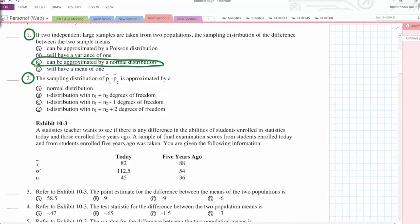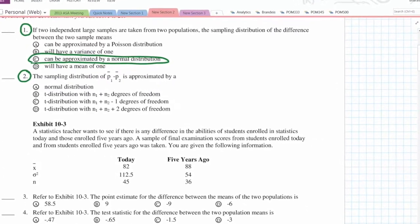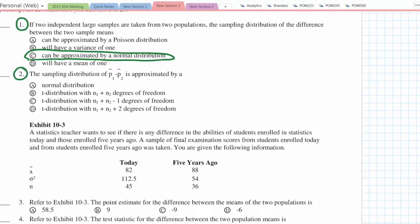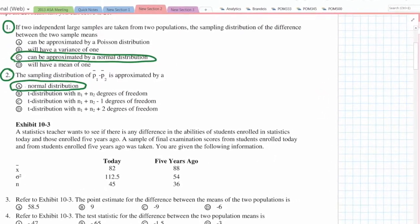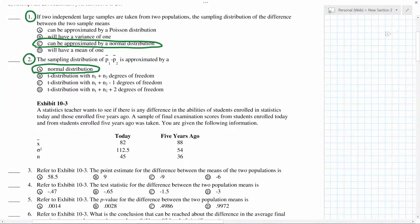The sampling distribution of p1 minus p2 bar is approximated by normal distribution. We know that proportions also can be approximated by normal distribution. Now for the third one, you have a two population situation and all the data is given. I'll write down all the steps.